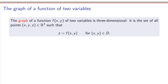When we studied functions of a single variable, we often sketched the graph of the function to understand its behavior. We can do the same for functions of two variables. The graph of a function f of two variables is three-dimensional — it's the set of all points in R³ such that z equals f(x, y). Because we start with two variables, we end up with something in three dimensions, which is a little harder to sketch.